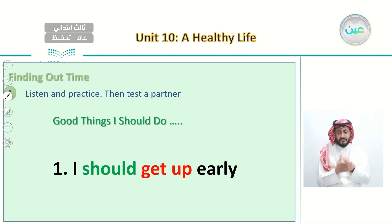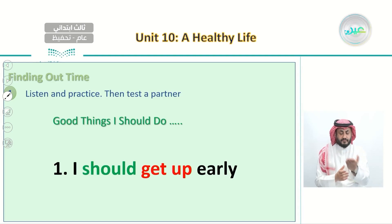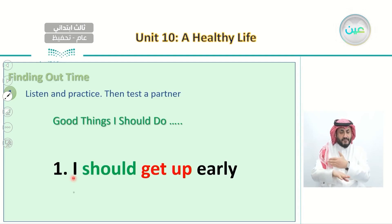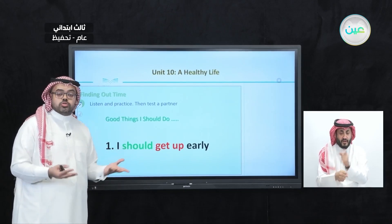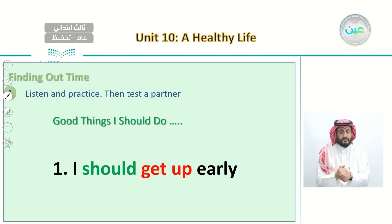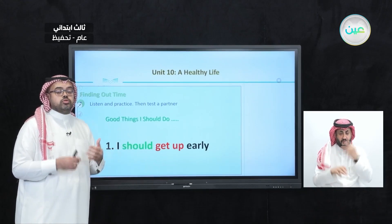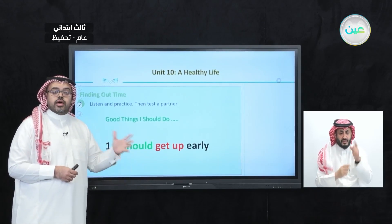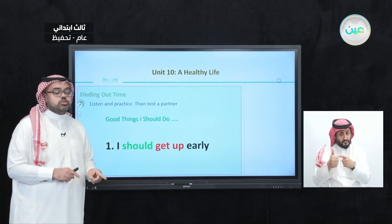We're going to listen and practice about the good things that we should do. Good things I should do — number one: I should get up early. This is the first good thing we should do to have a healthy life. If I want to have a healthy life, I should get up early before school — first to pray Al-Fajr prayer and also to go to school early.